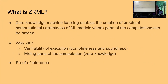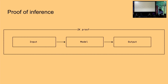When we're talking about ZKML, we're usually talking about proof of inference. We're creating a proof that a model has been evaluated on some input and that it indeed created some output, and we can verify this entire process cryptographically. You have some input, you feed it into some model, out you have an output, and you're able to create a zero-knowledge proof of this entire process.